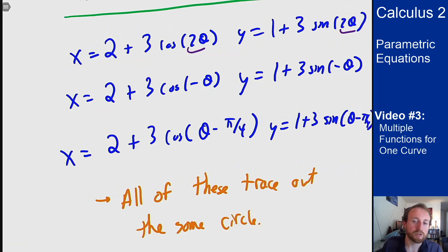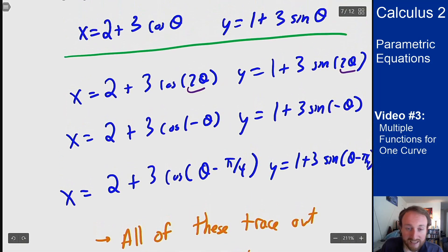This means when talking about a curve, you must specify how you're parameterizing it before going beyond a simple picture. If I want to know where the curve is at θ = π/2, all of these give different values. All four have a different point at θ = π/2, but they all trace out the same curve.